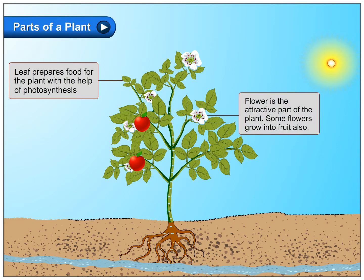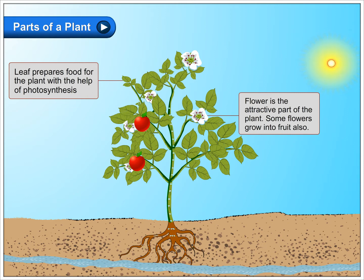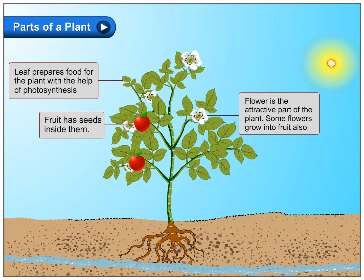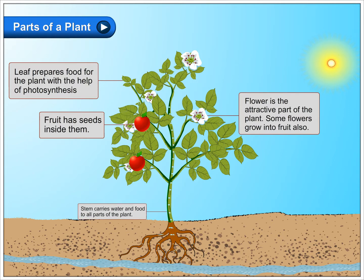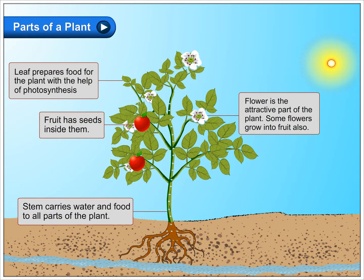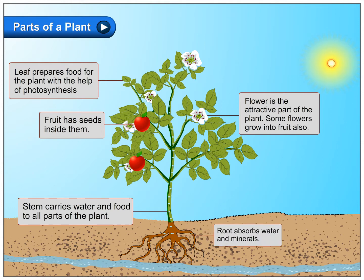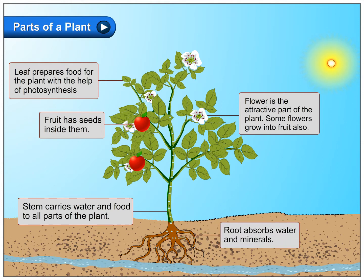The flower is the attractive part of the plant. Some flowers grow into fruit also. Fruit has seeds inside them. The stem carries water and food to all parts of the plant. The root absorbs water and minerals.